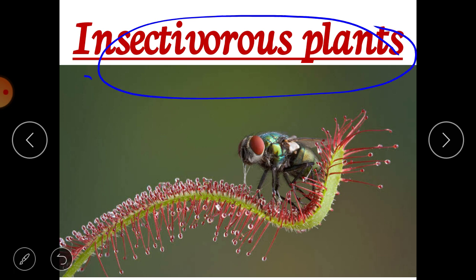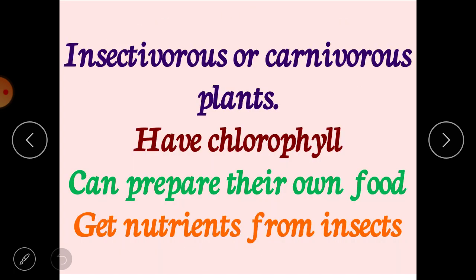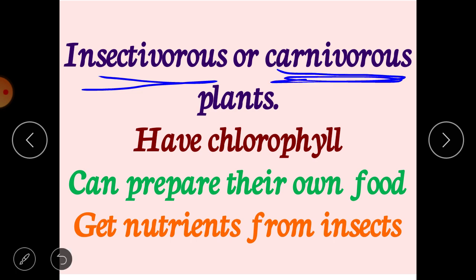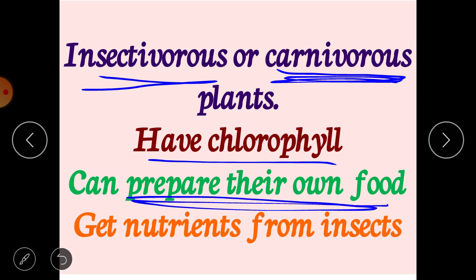Now we move to the next category: insectivorous plants. As the name suggests, insectivorous means these plants depend on insects for their food. But it does not mean they cannot prepare their own food — these plants do have chlorophyll and can prepare their own food. But like our body can survive on only chapatis, our body also needs some extra nutrients for proper growth and functioning, which is why we eat different kinds of fruits, vegetables, and milk.